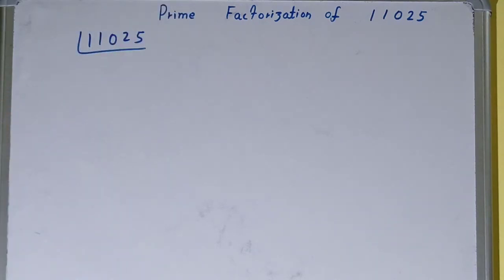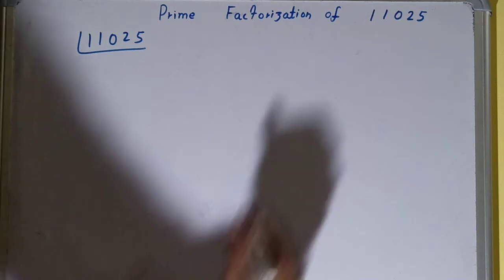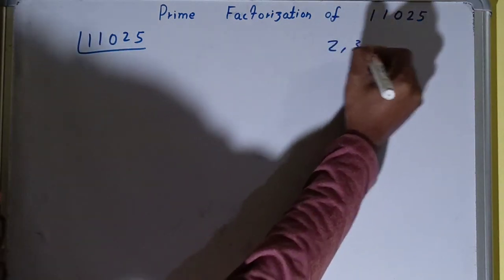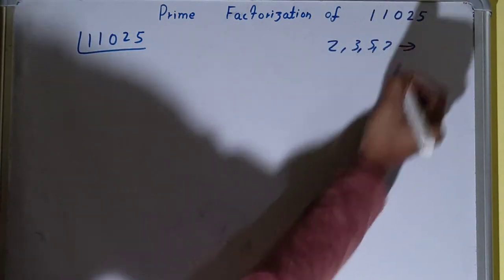Before solving this, you should have an idea about what prime numbers are. Prime numbers are numbers that are divisible by 1 and the number itself, like 2, 3, 5, 7, and so on.